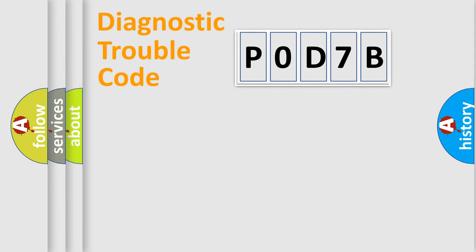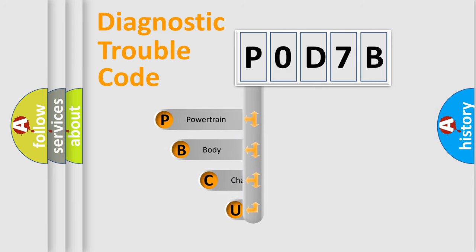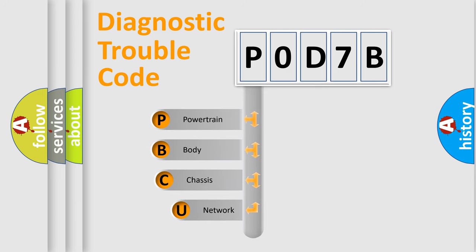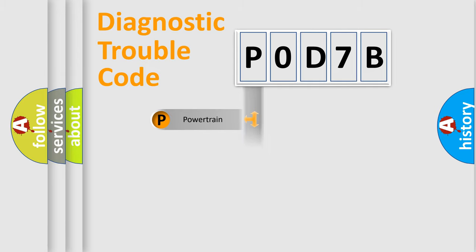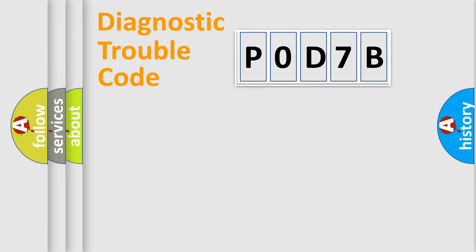Let's do this. First, let's look at the history of diagnostic fault code composition according to the OBD-2 protocol, which is unified for all automakers since 2000. We divide the electrical system of the automobile into four basic units: Powertrain, Body, Chassis, and Network.